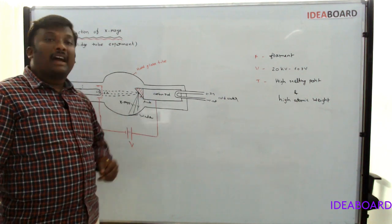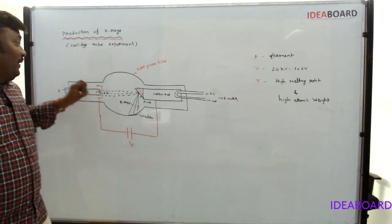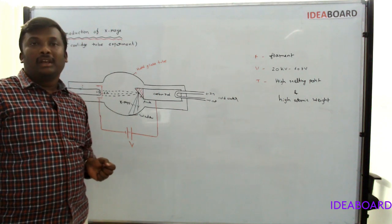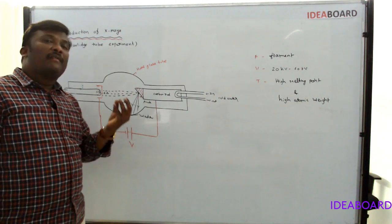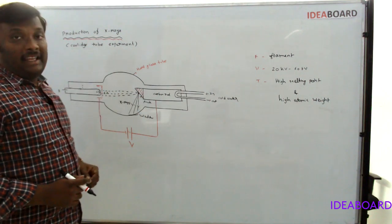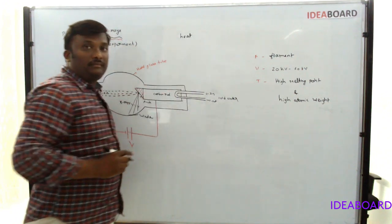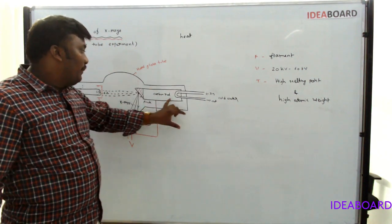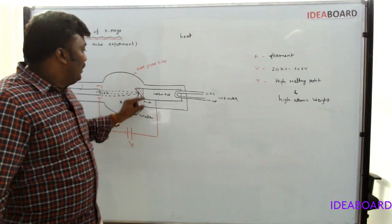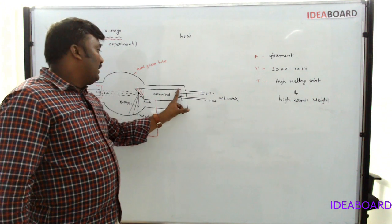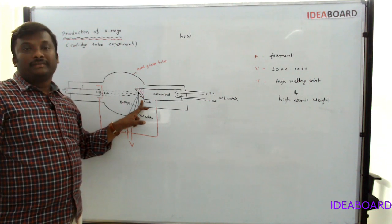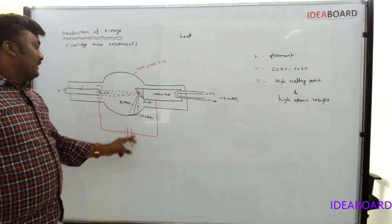Why is the carbon rod connected? After these high-energy electrons hit the target, only a maximum of 5% of X-rays are possible to liberate — meaning 90 to 95% of energy is converted into heat only. So to cool the target, a carbon rod is connected. Carbon is a metal rod with high thermal conductivity. Cold water is sent through this rod, which cools the rod and keeps the target maintained at constant temperature. From this arrangement, X-rays are liberated.